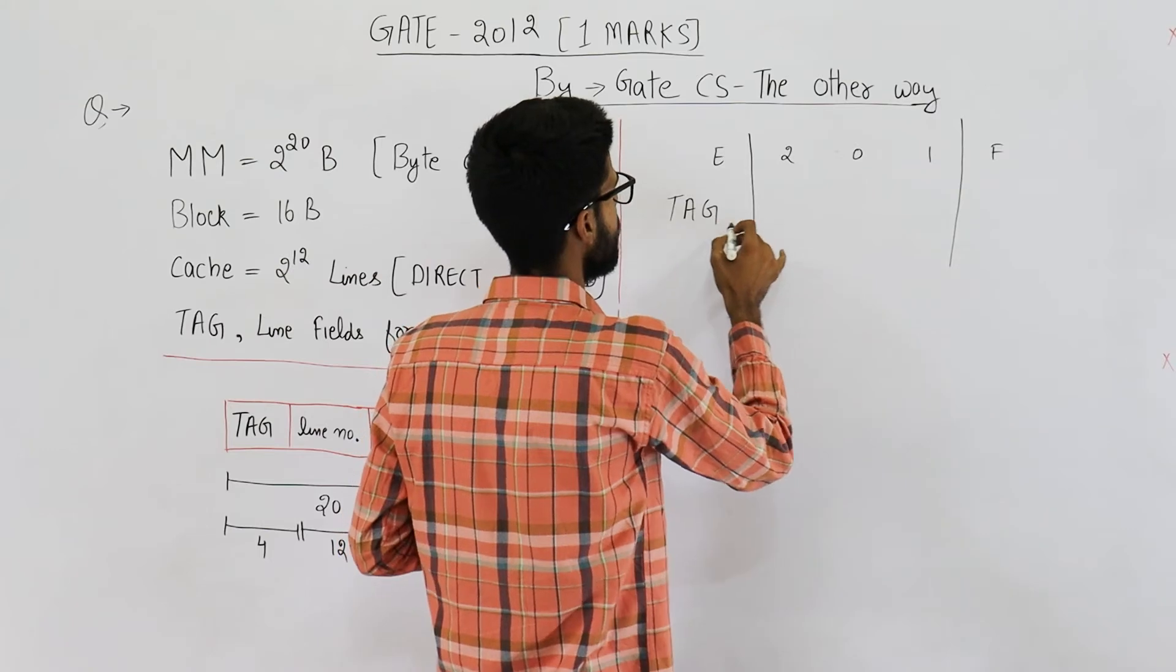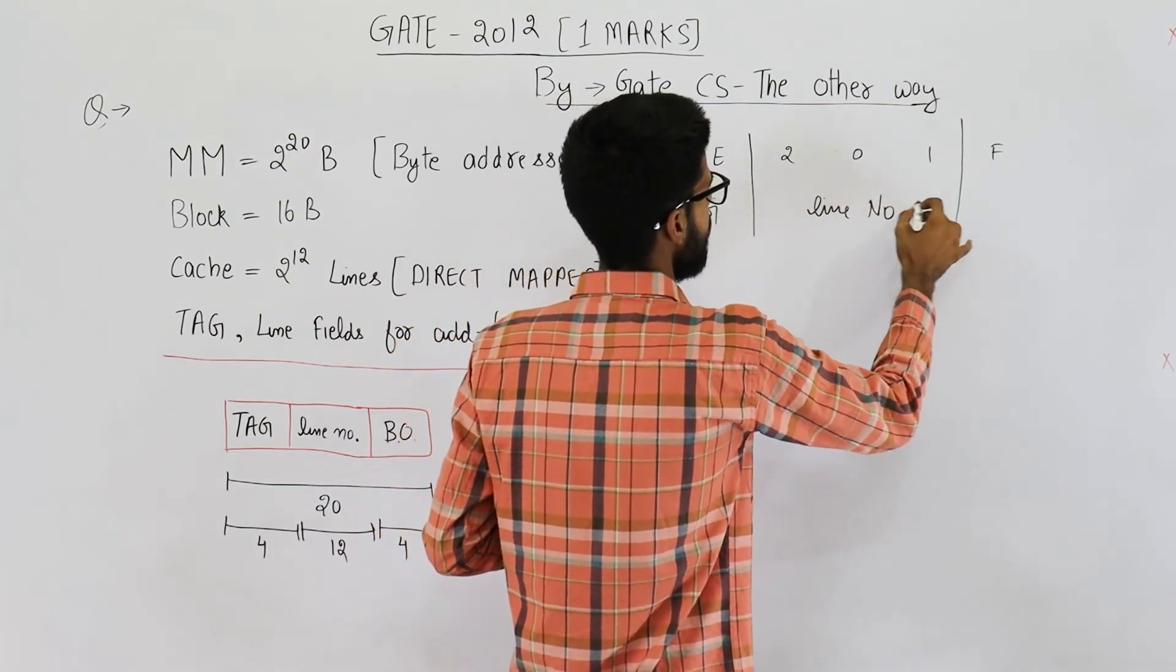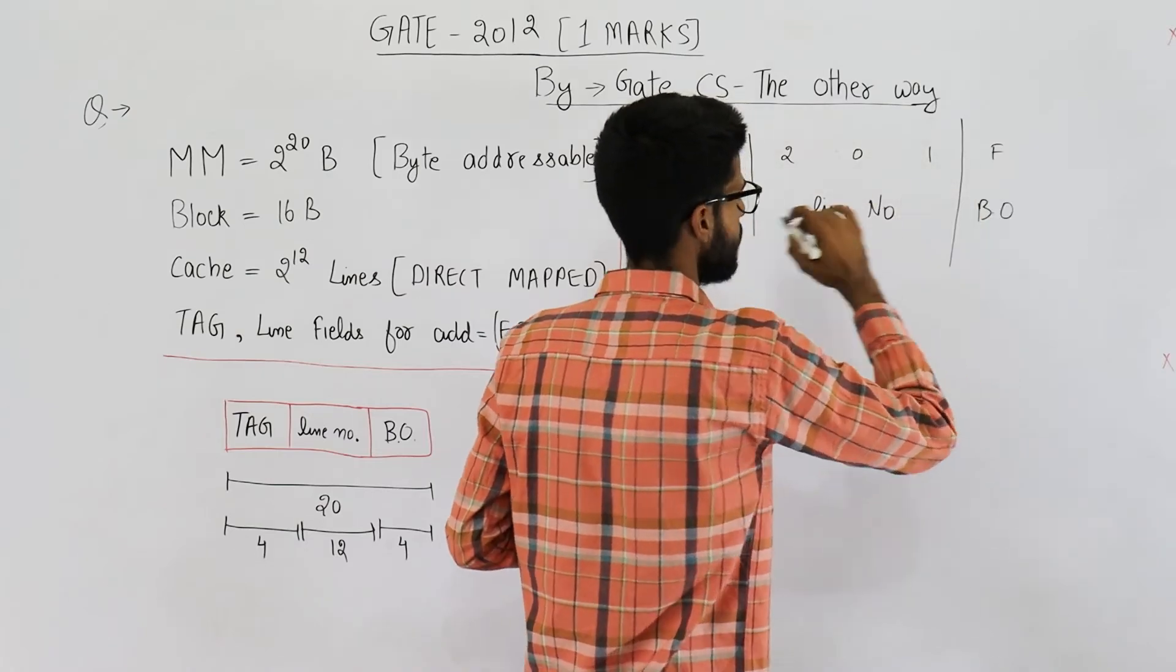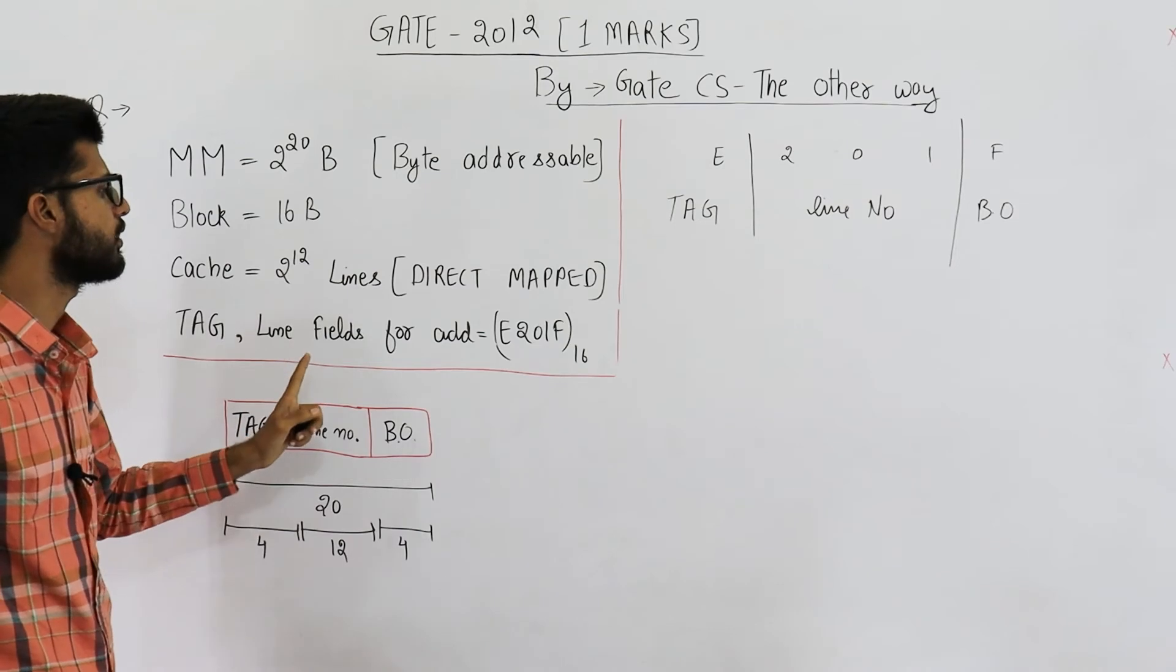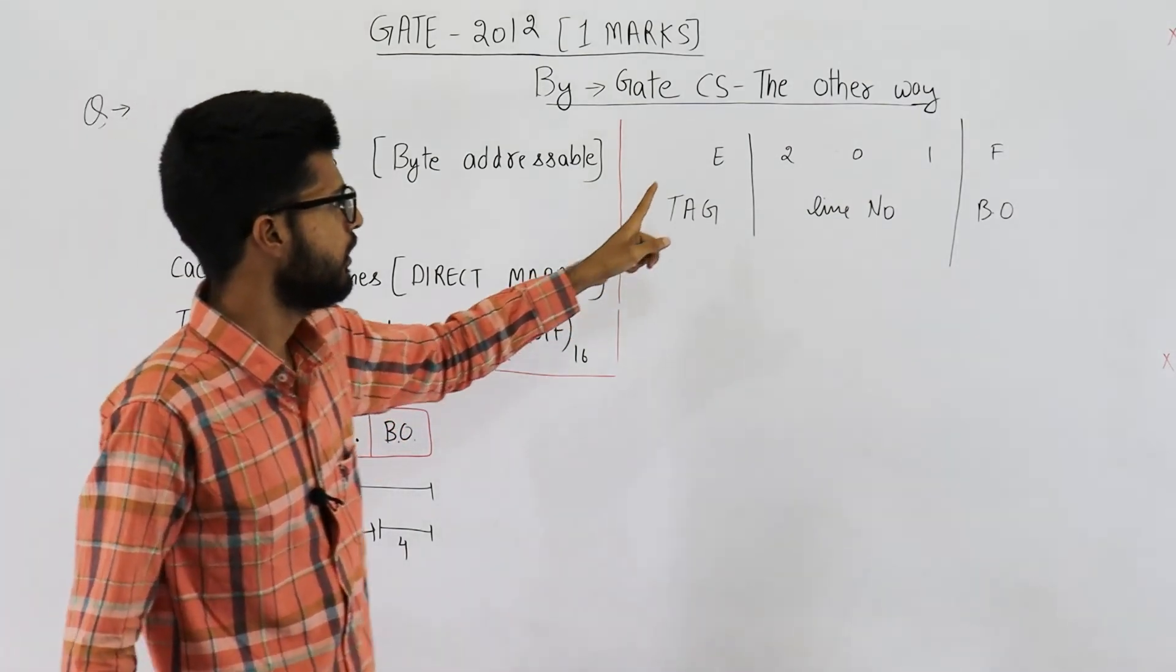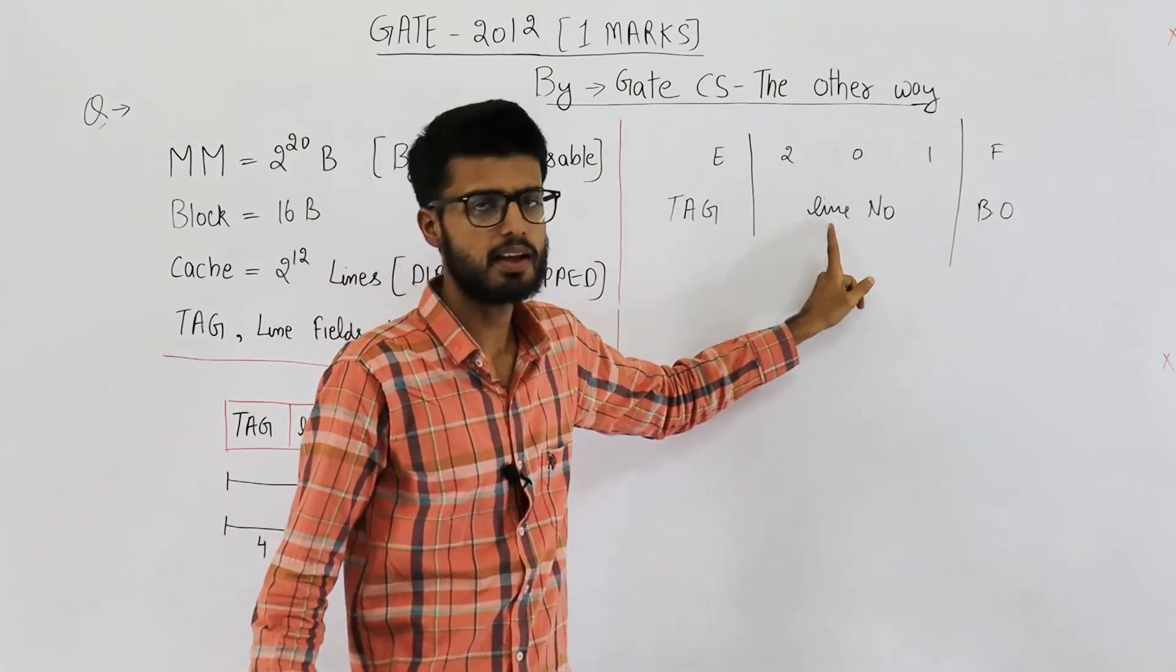So this is your tag, this is line number, and here we have the block offset. So they are asking about tag and line number fields for this address. It is E which is your tag and 201 is the line number.